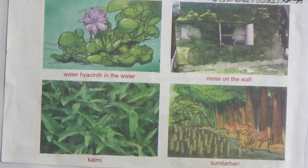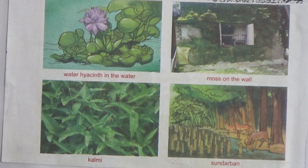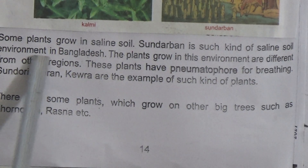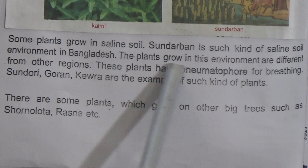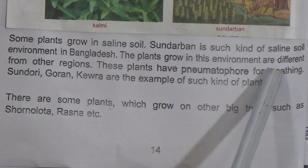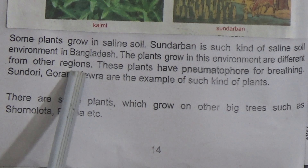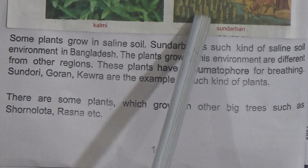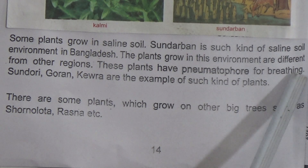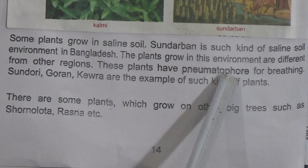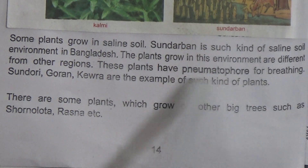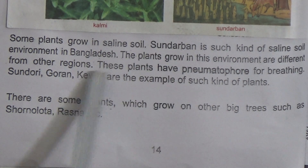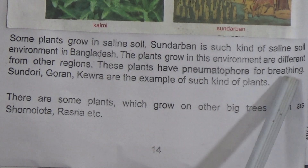Some plants grow in saline soil. The Sundarbans is one such saline soil environment in Bangladesh. The plants that grow in this environment are different from other regions. These plants have pneumatophores — a type of modified root — for breathing.